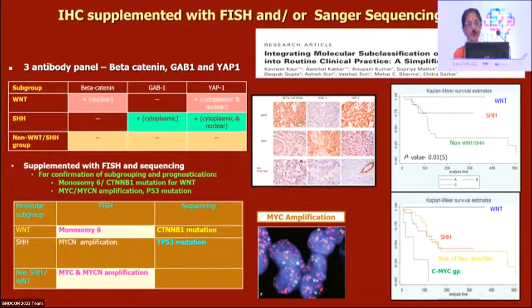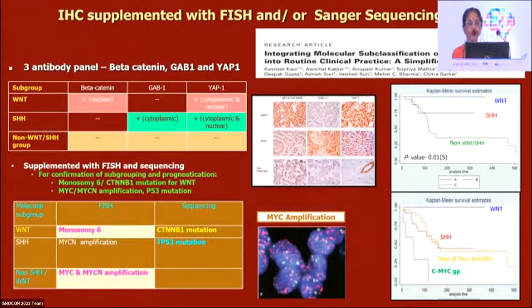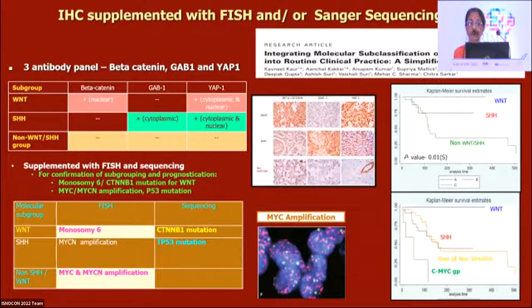Some centers add a fourth antibody, filamin A. Beta-catenin, GAB1, and YAP1 allow three subgroups: WNT (beta-catenin positive), SHH (GAB1 positive; YAP1 positive in both WNT and SHH), and non-WNT non-SHH (negative for all markers). However, given interpretation problems with beta-catenin and GAB1 immunohistochemistry, I recommend supplementing with FISH and/or Sanger sequencing depending on resources — especially to confidently identify the best or worst prognosis groups.